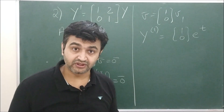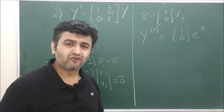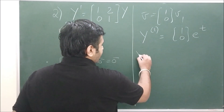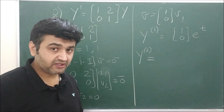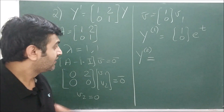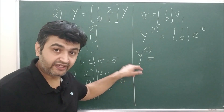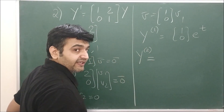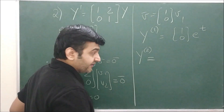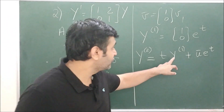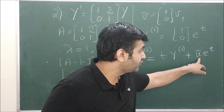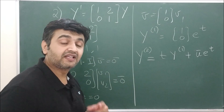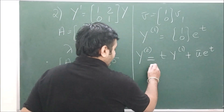The question is: how do you find the second linearly independent solution? Jordan canonical form theory comes into the picture, but I won't go into detail here — my aim for this lecture is that you can solve examples. I will record a separate lecture on why this formula arises. The formula for y2 is: y2 = t·y1 + ū·e^(λt). Here ū is the generalized eigenvector, obtained by solving (A − λI)·ū = v̄, where v̄ is the previous eigenvector.